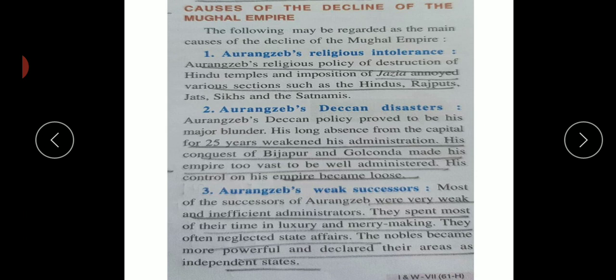The reasons for the decline of the Mughal Empire: first, Aurangzeb's religious policies - not giving respect to other religions, not allowing construction of Hindu temples, and imposing jaziya on Rajputs and Sikhs - brought great destruction. Second, the Deccan disaster: Aurangzeb spent 25 years in the Deccan without proper administration, and he was unable to conquer Bijapur and Golconda, causing administration to become loose.